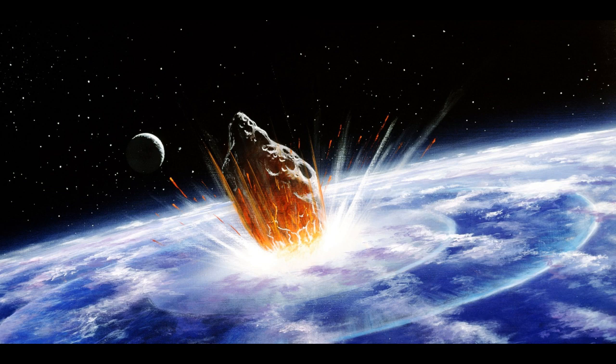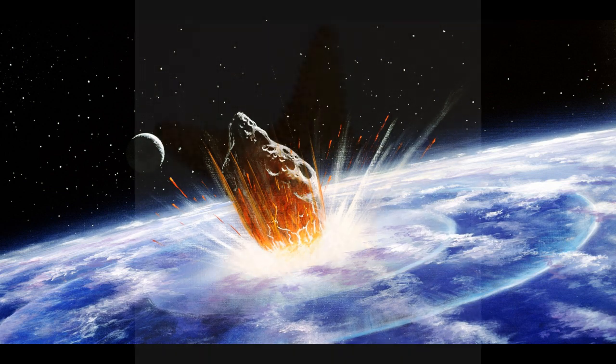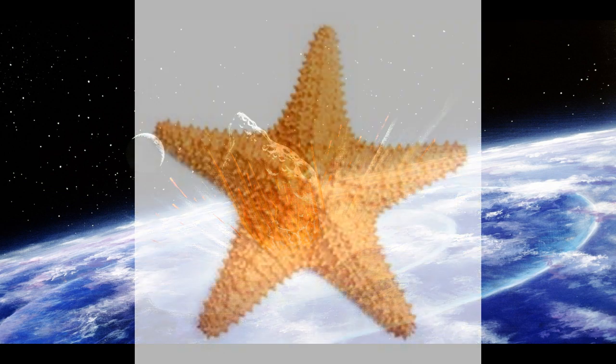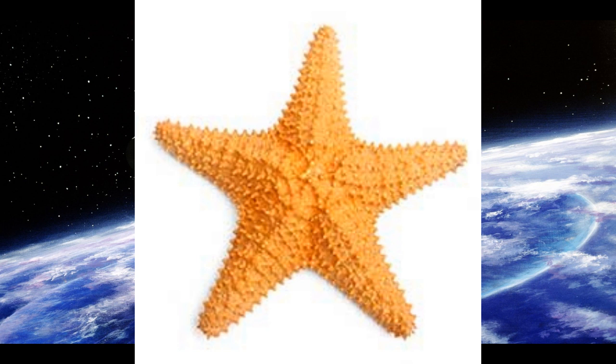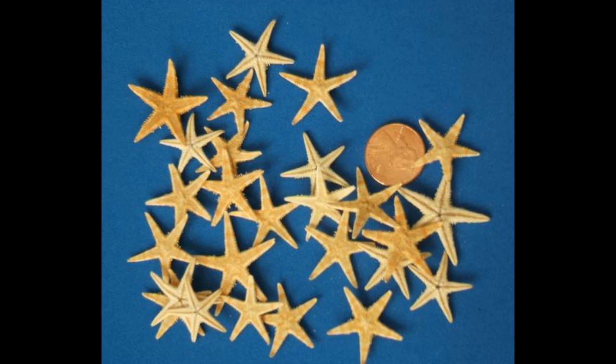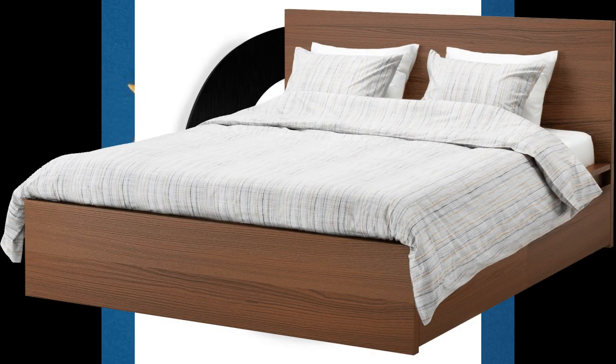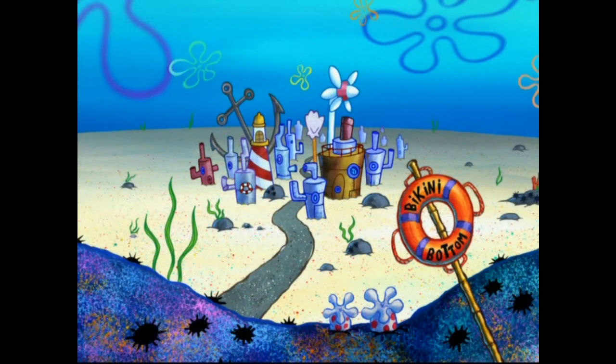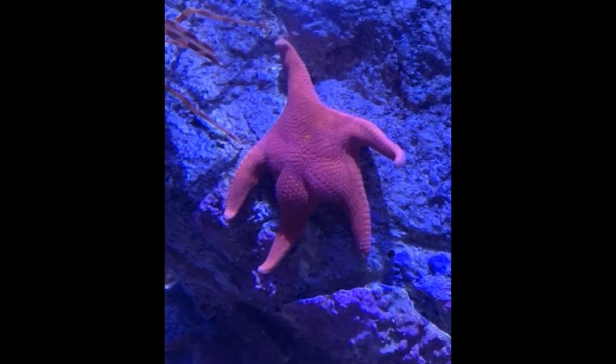Starfish or sea stars are star-shaped echinoderms belonging to the class Asteroidea. Common usage frequently finds these names being also applied to ophiuroids, which are correctly referred to as brittle stars or basket stars. About 1,500 species of starfish occur on the seabed in all the world's oceans, from the tropics to frigid polar waters. They are found from the intertidal zone down to abyssal depths, 6,000 meters — 20,000 feet — below the surface.